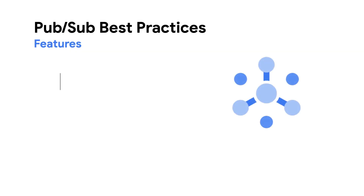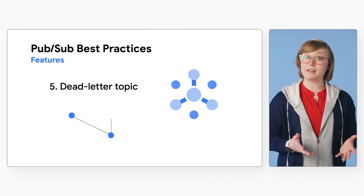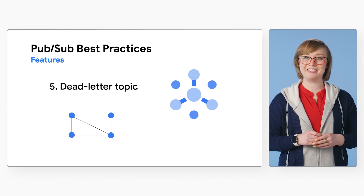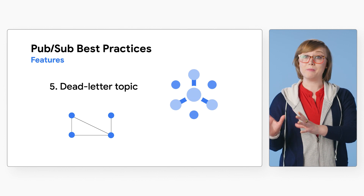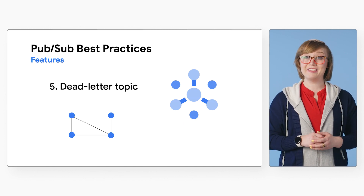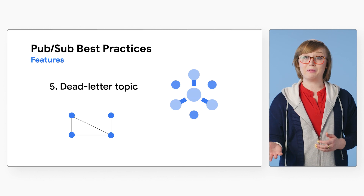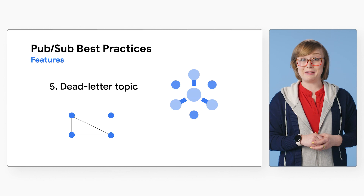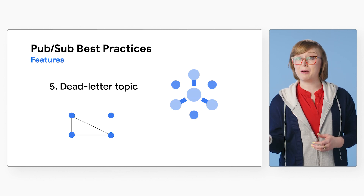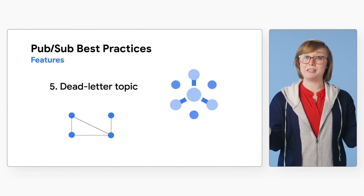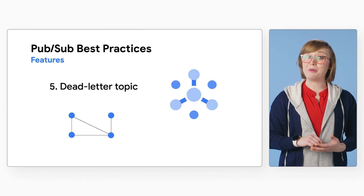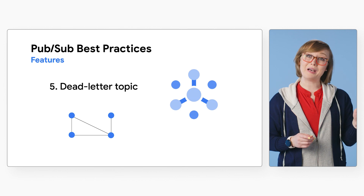Number five: dead letter topic. Consider setting up a dead letter topic, allowing Cloud PubSub to forward undeliverable messages to it. You can move messages from the dead letter topic to your original topic by using a Dataflow pipeline to move messages from the dead letter topic to your topic, updating an existing pipeline to read from both the original topic and dead letter topic based on configuration, or by creating a new system that, when enabled, moves messages from one topic to another.